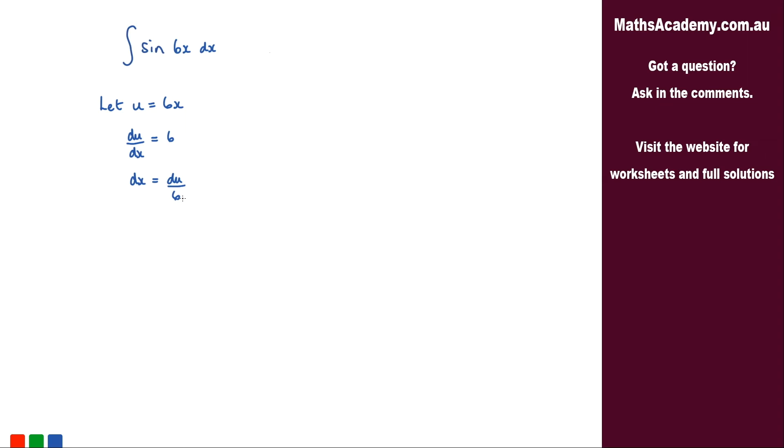Now I can go back to that original integral and just make those substitutions. We'll have the integral of sine. Instead of the 6x what we're going to have is u, so sine u. And instead of this dx, well we've now substituted in and we know that dx is du over 6.